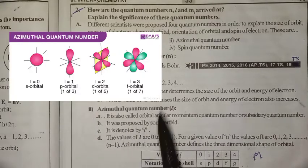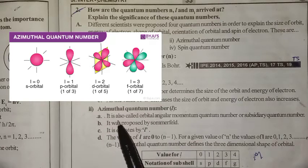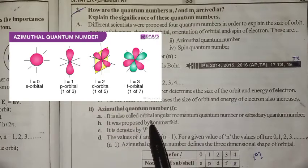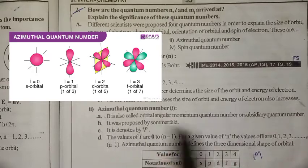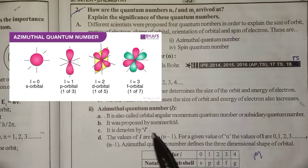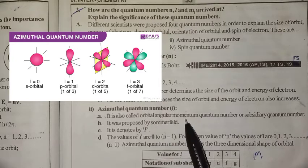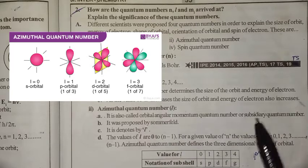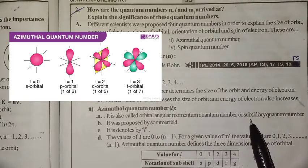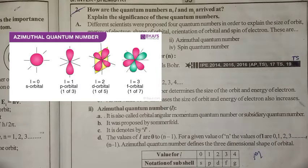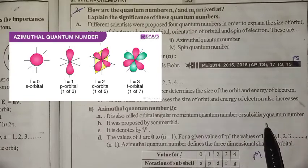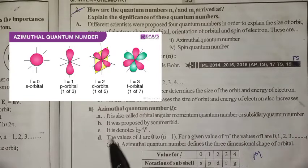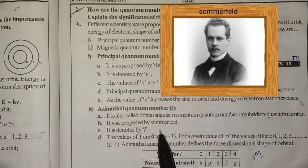Second quantum number: the azimuthal quantum number. It is also called the orbital angular momentum quantum number. It was proposed by Sommerfeld.